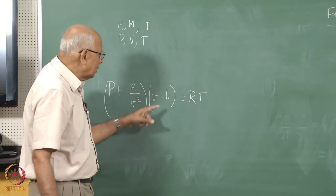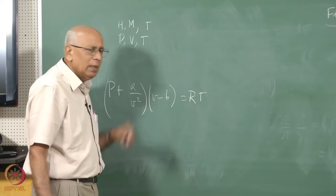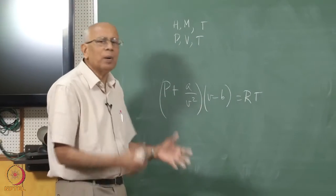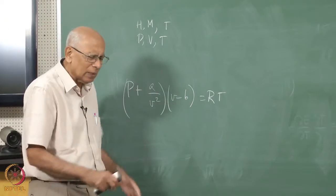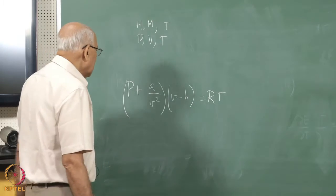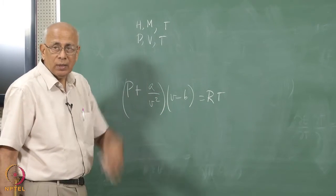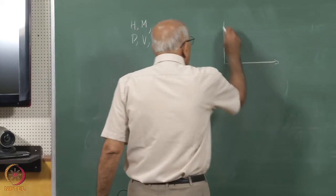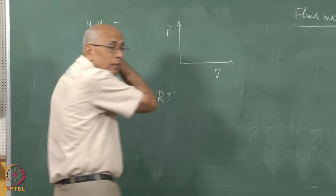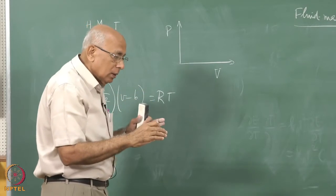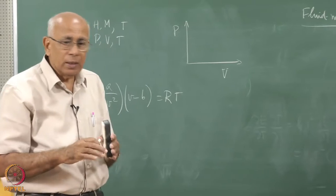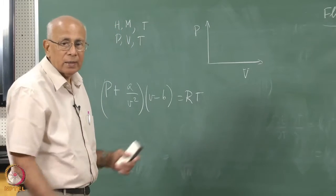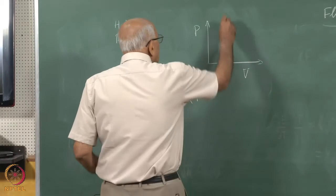The Van der Waals equation is a cubic in v, which is why you get three roots. Below a certain critical temperature you end up with three roots: two stable roots on either side corresponding to liquid and gas, and an unstable root in the middle. A tie-line construction must be drawn.